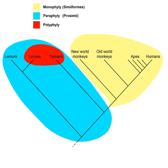By comparison, the term paraphyletic uses the ancient Greek prefix para, meaning beside, near, and refers to the situation in which one or several monophyletic subgroups are left apart from all other descendants of a unique common ancestor. That is, a paraphyletic group is nearly monophyletic — hence the prefix para.